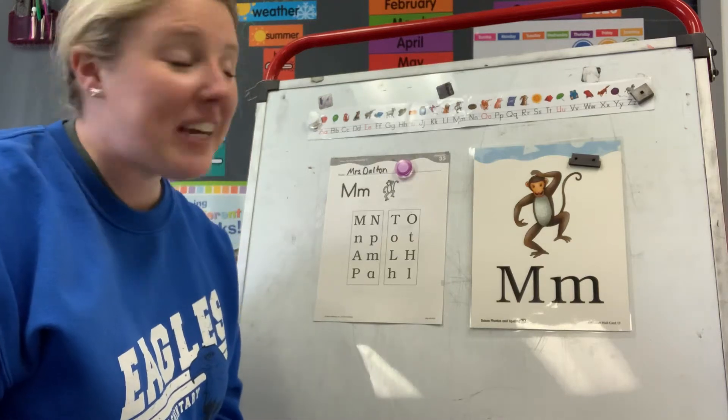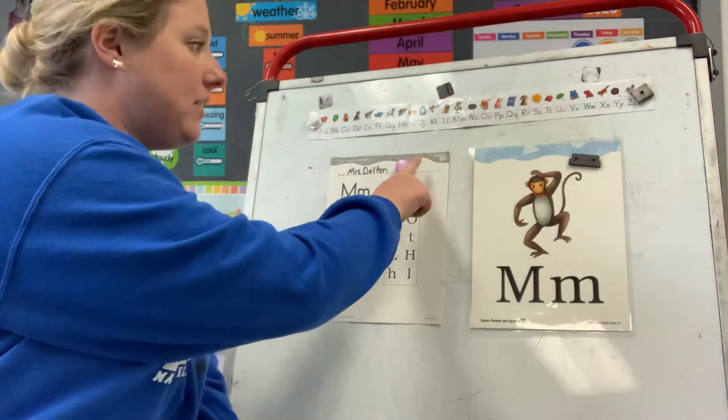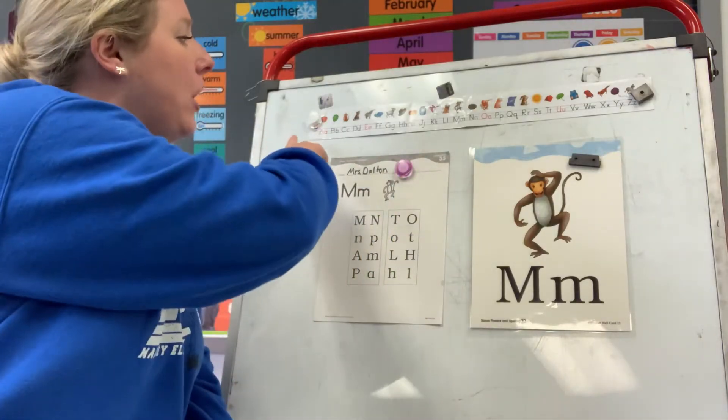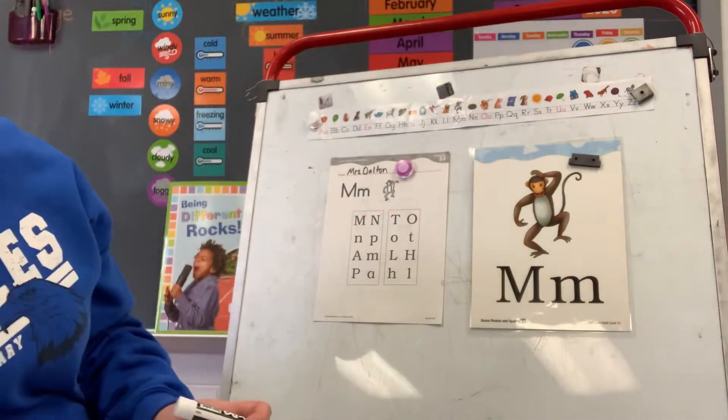Hey boys and girls, welcome to your phonics lesson today. You're gonna need worksheet number 35. That's a three and a five in the top right hand corner. Then you're gonna need your alphabet handwriting strip. So make sure you have that as well.